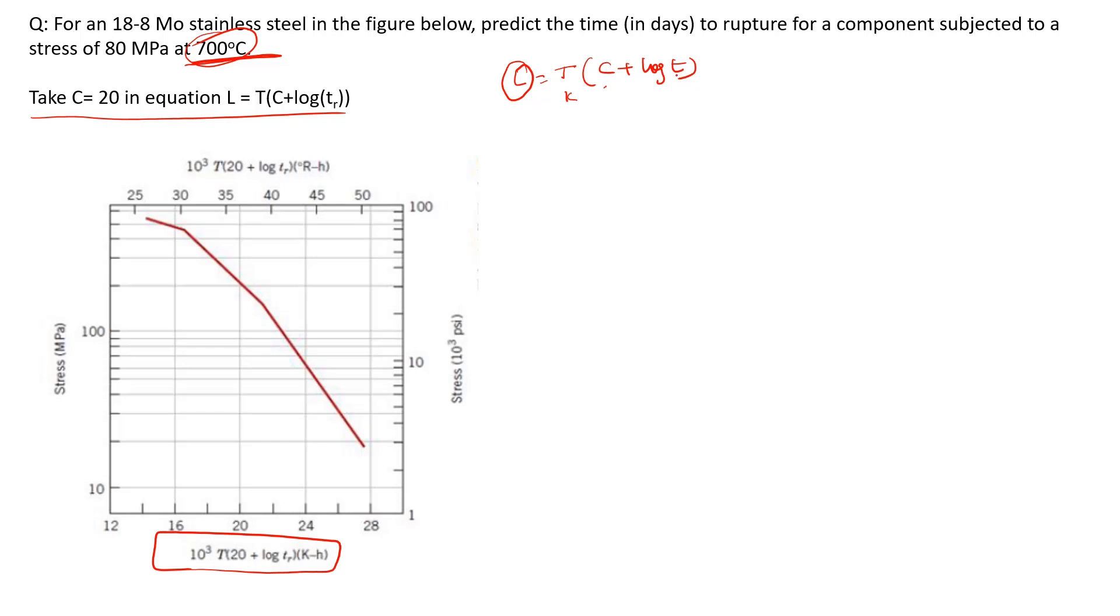C is a constant term, and t_R is the time in hours. You can see here. Now for a stress of 80 MPa, we need to find the time it is going to sustain.